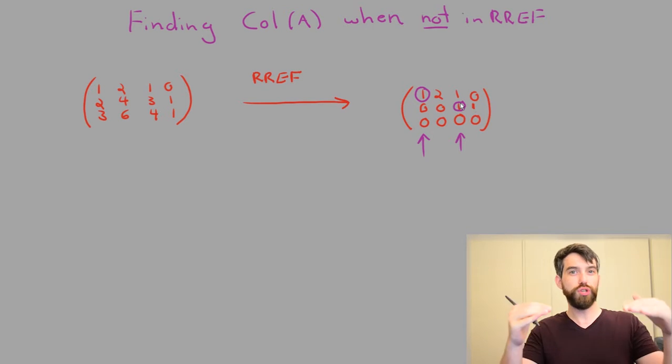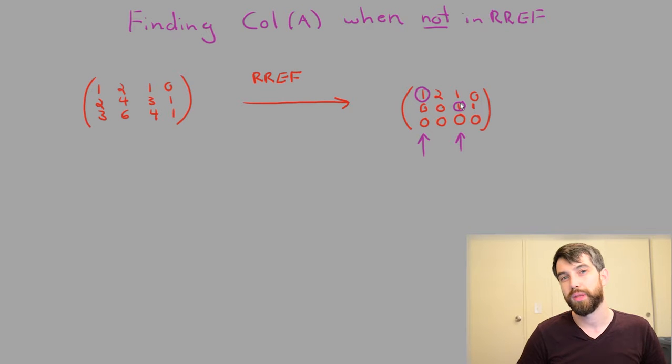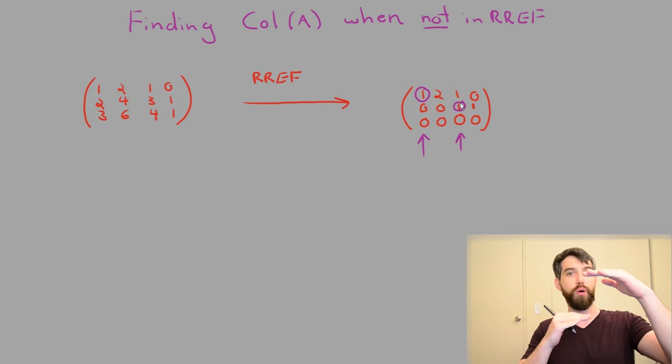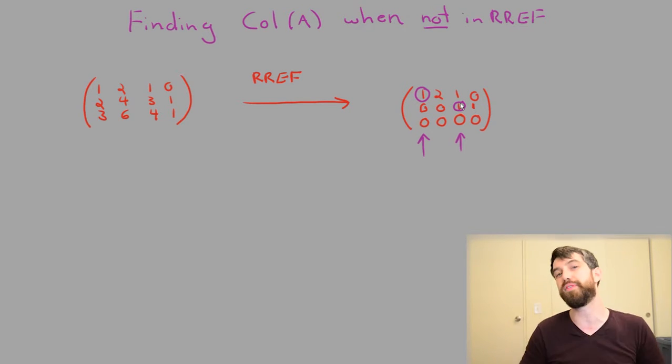However, when you do a row operation, you change the columns. For example, the vector, if you interchange two rows, becomes a different vector. So, doing row operations to put into RREF is going to change what the columns are. And while maybe the solution set to AX equal to B doesn't change, if you do a row operation that interchanges two rows, then the B's are going to change as well, so the column space is going to change.